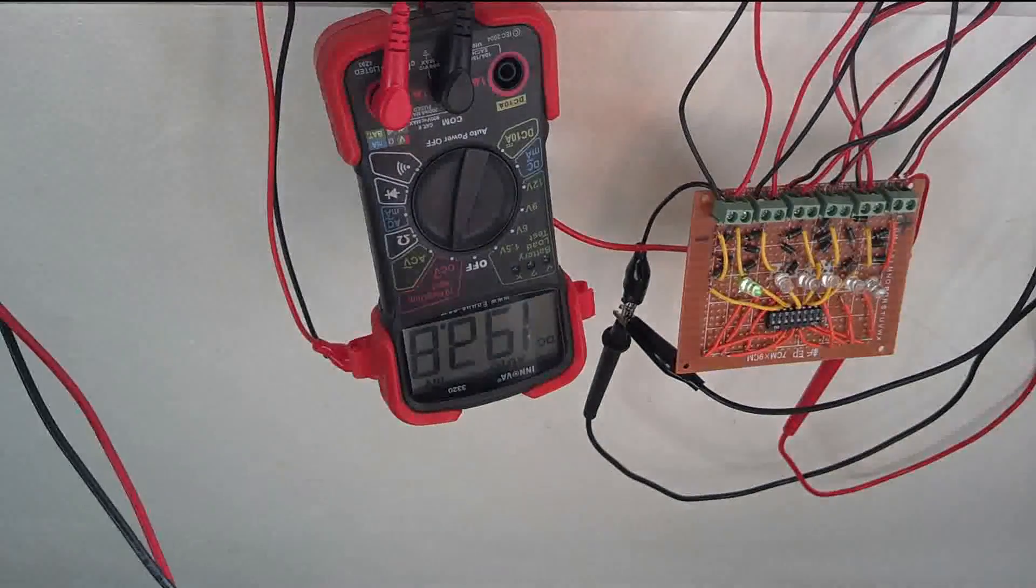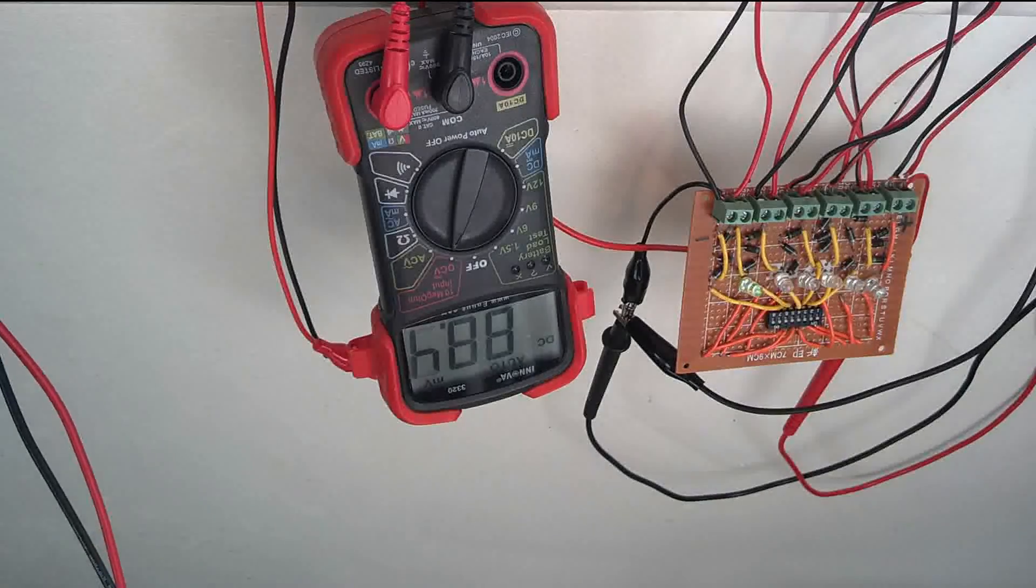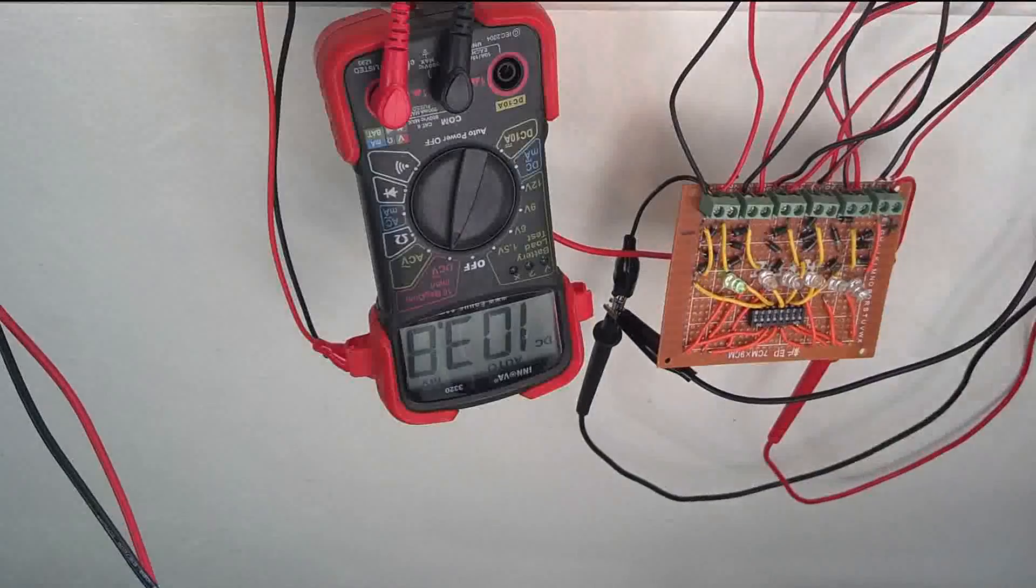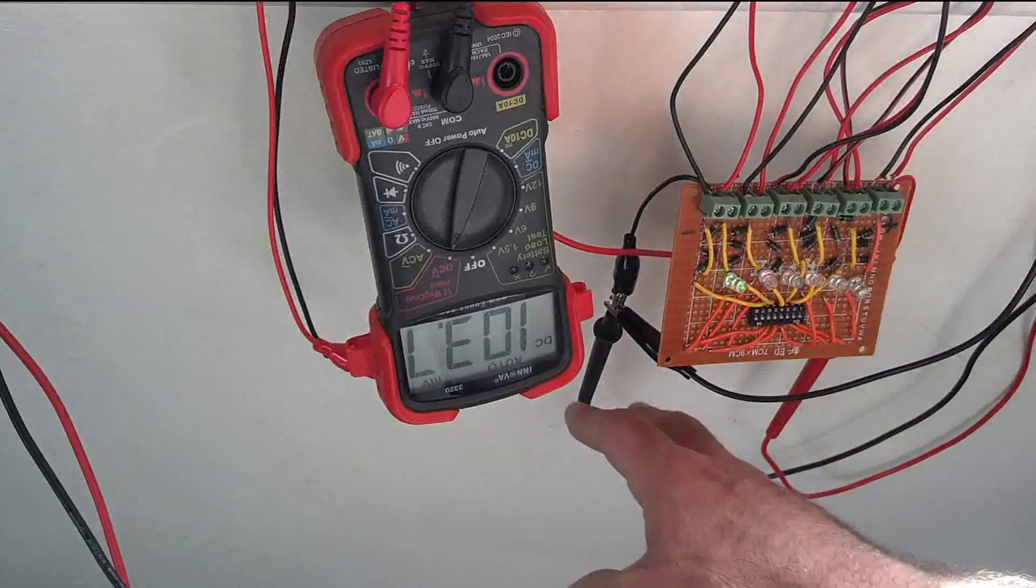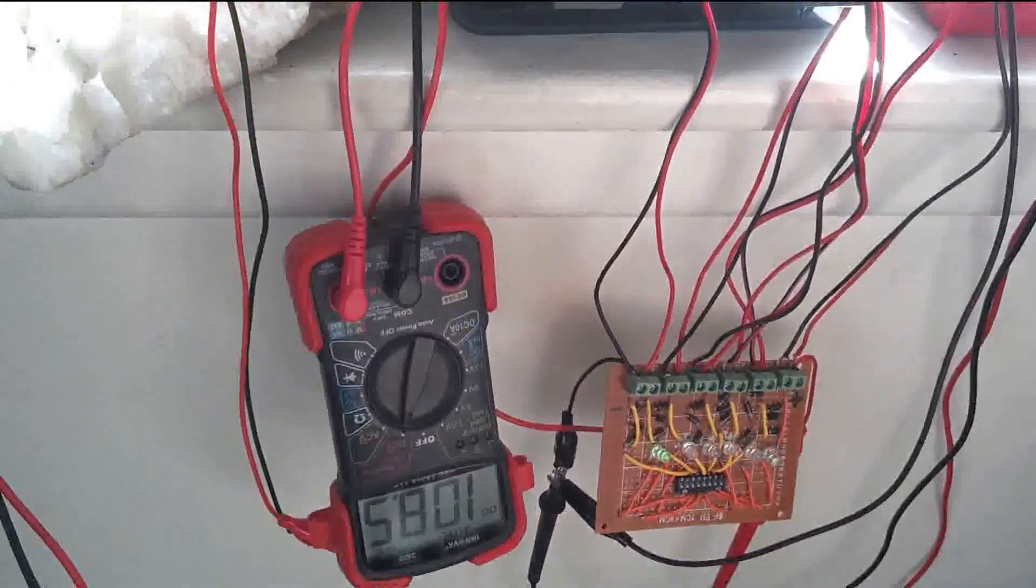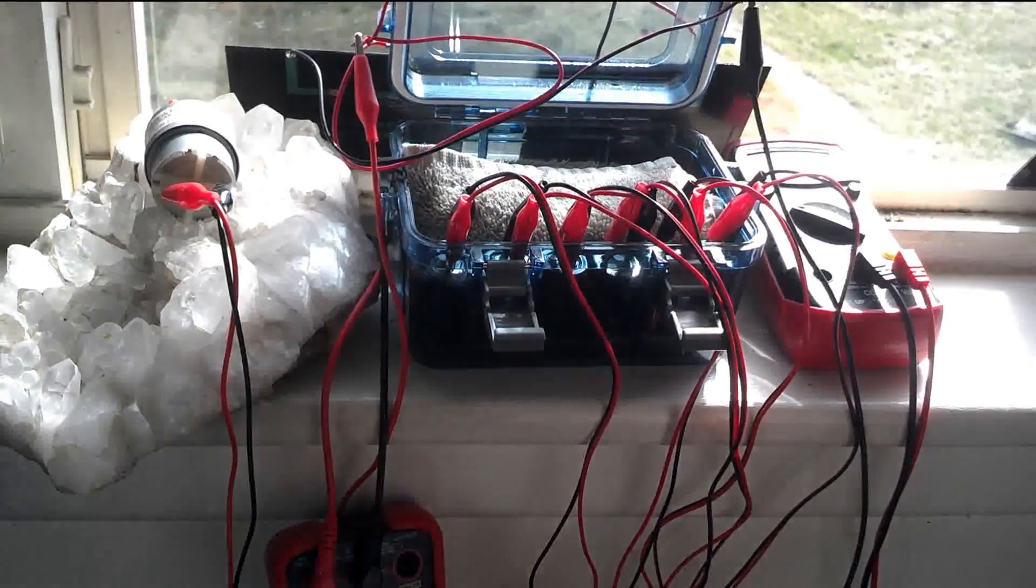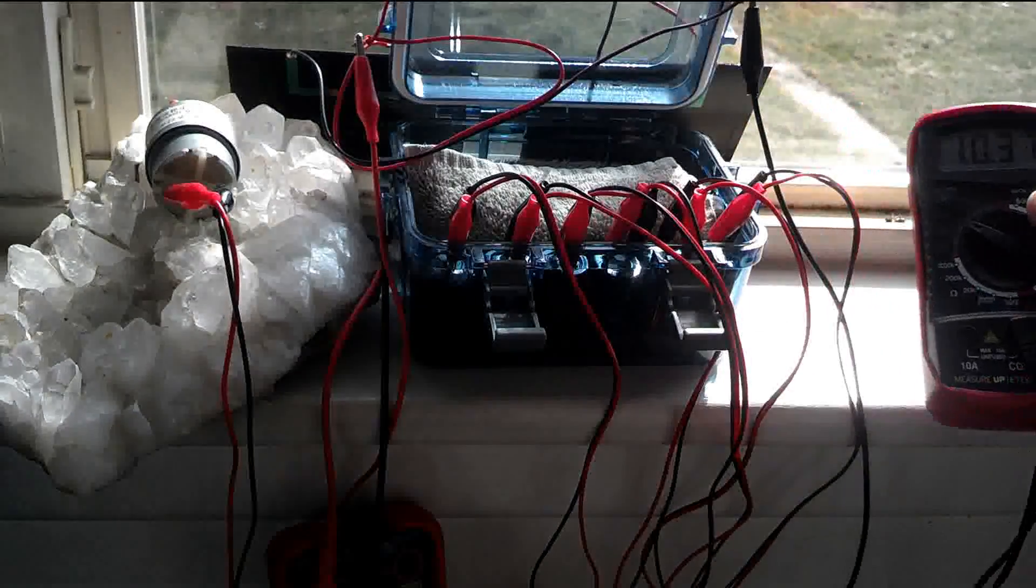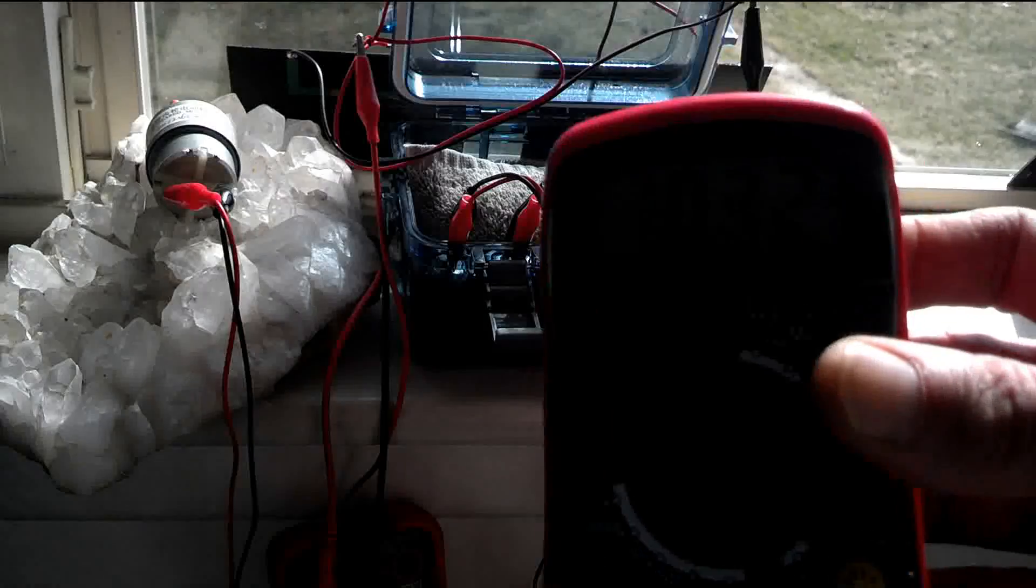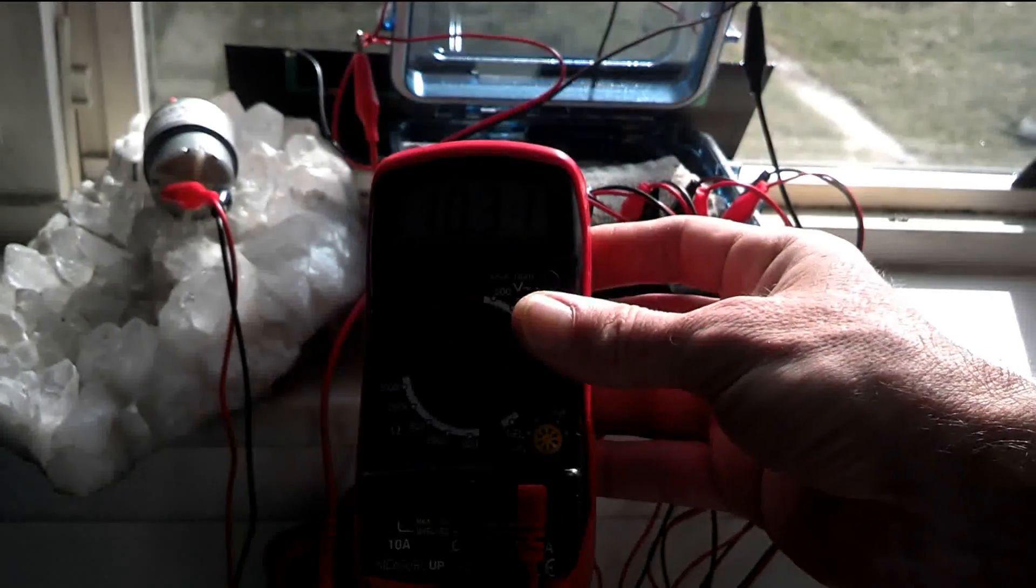I had to rearrange things a little bit so that you could see what's going on better here. This is the charge balancer and you can see it's connected to the bank here, positive and negative.